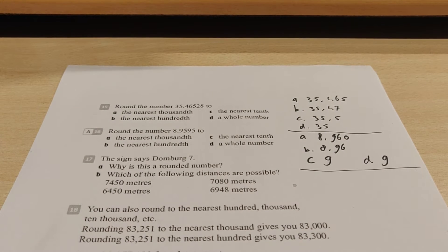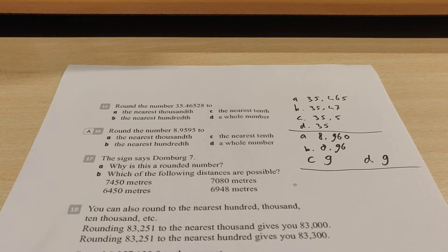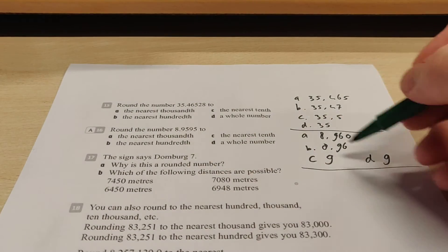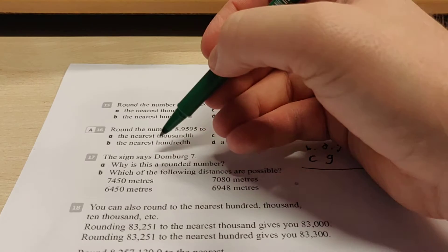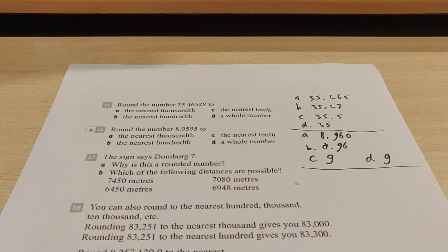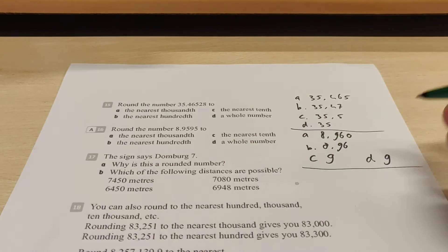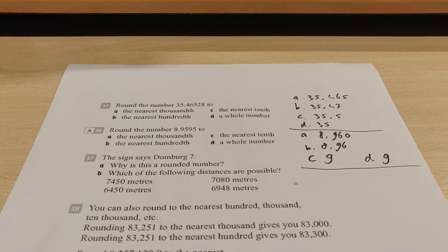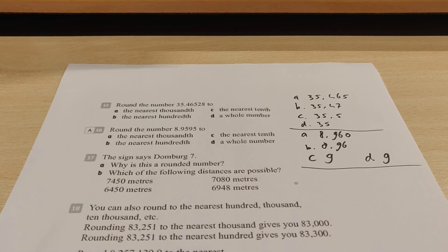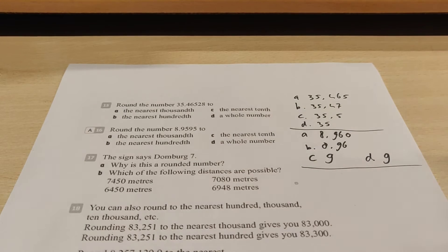Moving on to exercise 17. The sign says Domburg 7. Why is this a rounded number? Well, sometimes you see these things on... I mean, the sign is actually not here. In your book it is. But it's a sign that says how many kilometers you have to cycle to get to a city. In this case, to Domburg. Well, it's a rounded off number because it's very hard to measure the exact amount of meters that you have to travel. Also, it doesn't really make a lot of sense, right? If you have to cycle a meter more or less, it doesn't really matter.